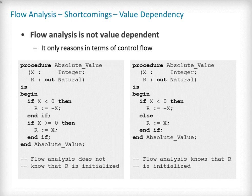It is also worth noting that flow analysis is not value-dependent, in the sense that it never reasons about values of expressions. As a consequence, if some paths of execution in the sub-program are impossible due to values of expressions, it will still consider them feasible and therefore may emit unnecessary messages. For example, there is a version of the absolute value sub-program where flow analysis computes that on a path entering none of the two conditional statements, R is uninitialized. As it does not consider values of expressions, it cannot know that such a case can never happen. To avoid this problem, it is better to make the control flow explicit, as in the right-hand version of the absolute value sub-program.